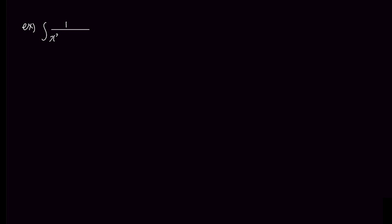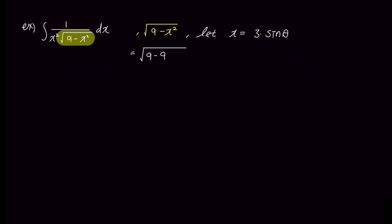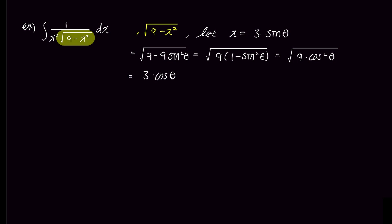Now let's solve an example problem together. The first problem is the integral of 1 over x squared times square root of 9 minus x squared. We see the square root of 9 minus x squared in the denominator, so let's substitute x with 3 sine theta. Then it becomes the square root of 9 minus 9 sine squared theta, which simplifies to the square root of 9 times 1 minus sine squared theta, and further to the square root of 9 times cosine squared theta, giving us 3 cosine theta. We also replace dx with 3 cosine theta d theta.